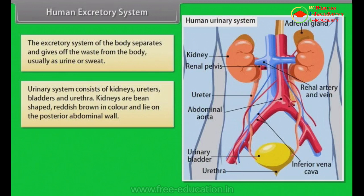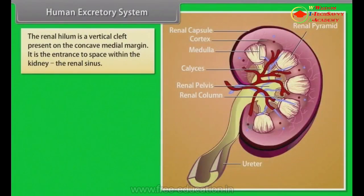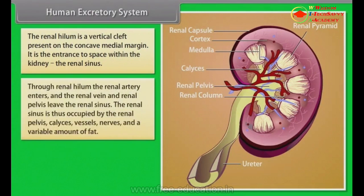Kidneys are bean-shaped and reddish-brown in colour, and lie on the posterior abdominal wall. Each kidney in an adult human weighs about 150 grams and measures approximately 10 cm in length, 5 cm in width, and 2.5 cm in thickness. The renal hilum is a vertical cleft present on the concave medial margin. It is the entrance to the space within the kidney called the renal sinus. Through the renal hilum, the renal artery enters, and the renal vein and renal pelvis leave the renal sinus. The renal sinus is occupied by the renal pelvis, calyces, vessels, nerves, and a variable amount of fat.